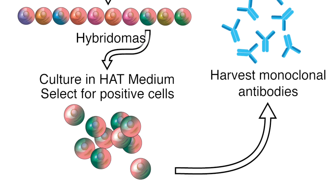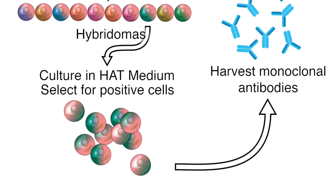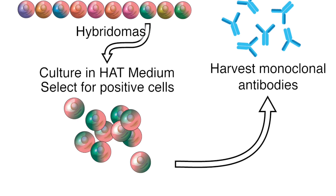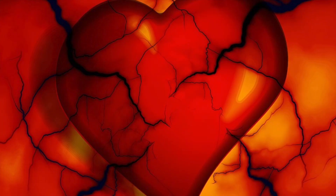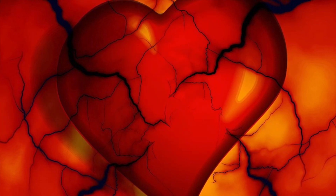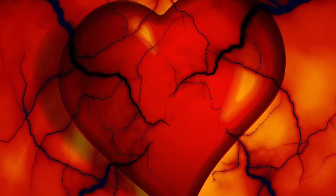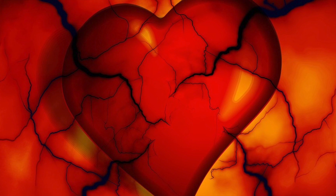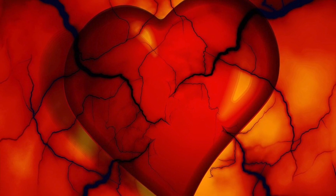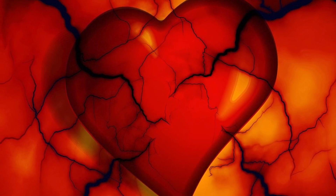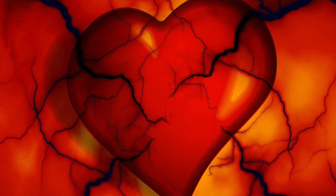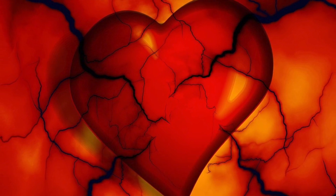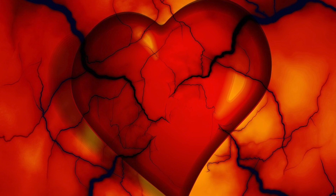We can use monoclonal antibodies for many things. Firstly, we have diagnosis of disease. Monoclonal antibodies are made to bind to a specific antigen found on the pathogen, blood clots, or cancer cells. The monoclonal antibodies may also carry markers, making it easier for doctors to detect illnesses. For example, the blood test for prostate cancer uses monoclonal antibodies to bind to prostate-specific antigens.